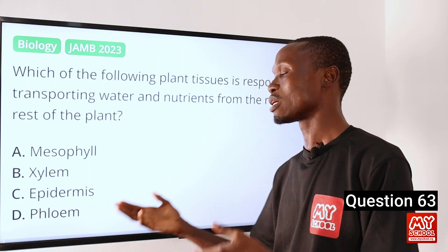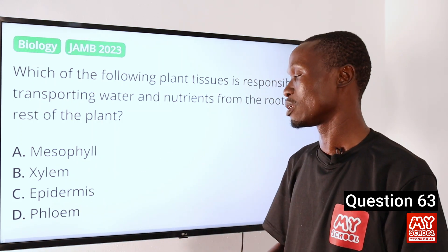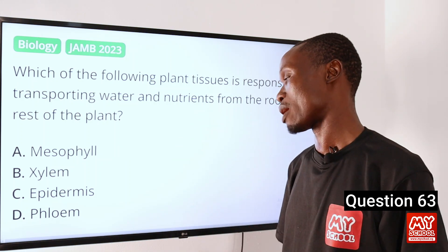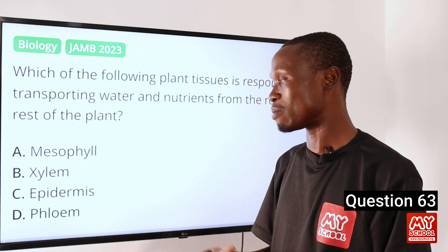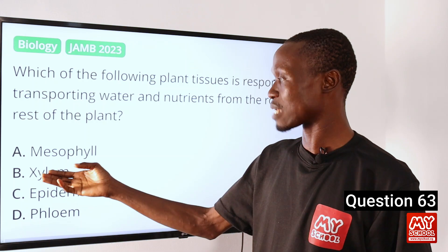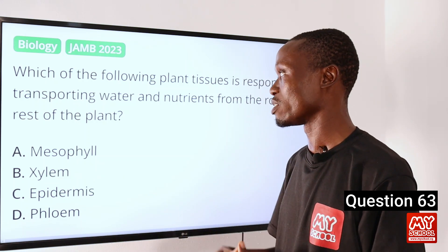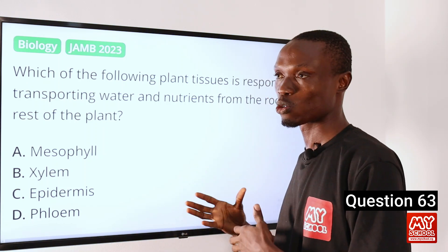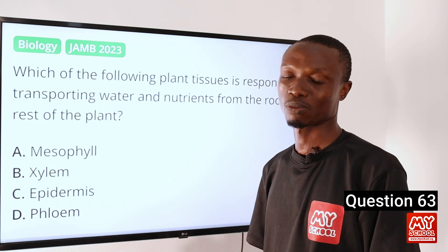Xylem is the plant tissue responsible for transporting water and nutrients from the root to the rest of the plant. So that makes option B the correct option.